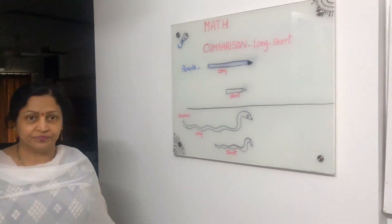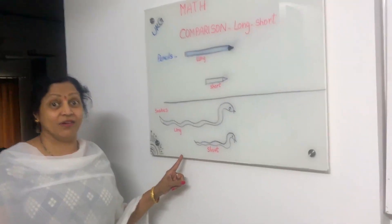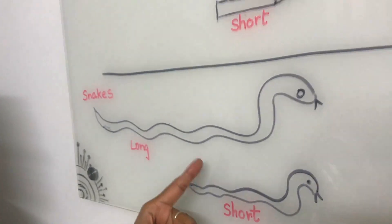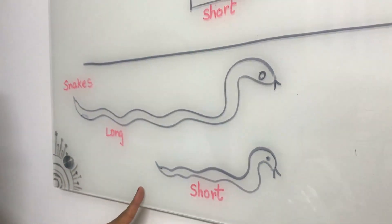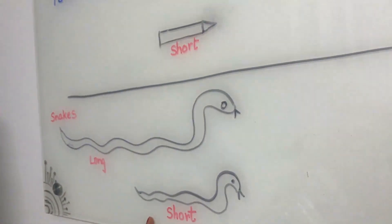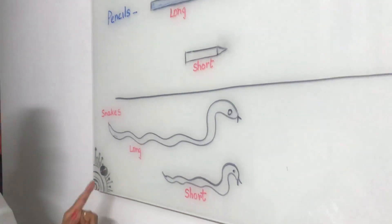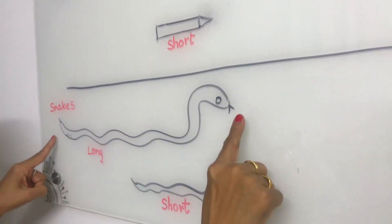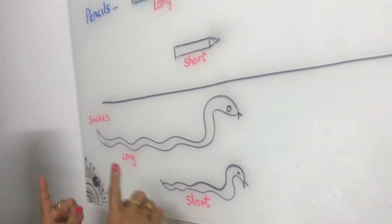Now see here — there are two more objects. What are these? These are snakes. See, there are two snakes here. How can you say which one is big and which is small, which one is long and which one is short? By distinguishing the length — this is from here to here, this is long, and this is short.